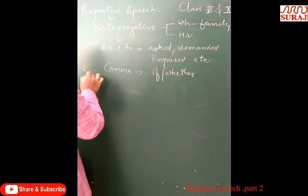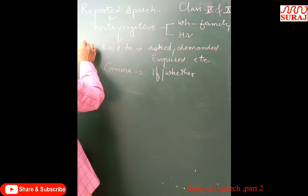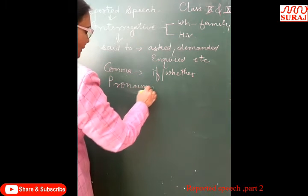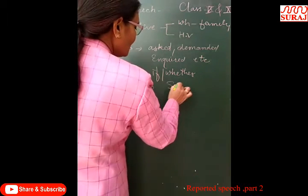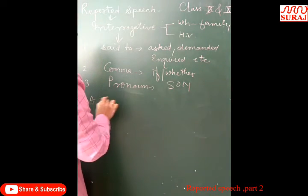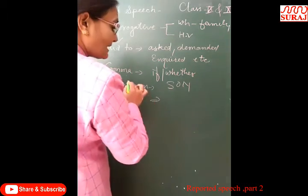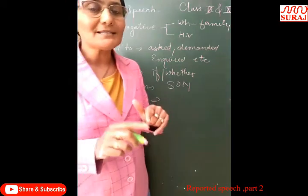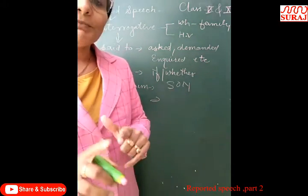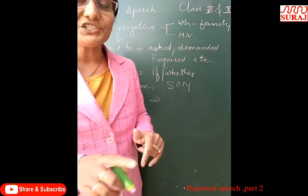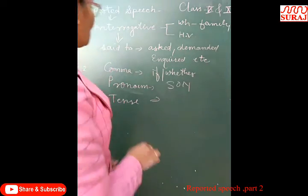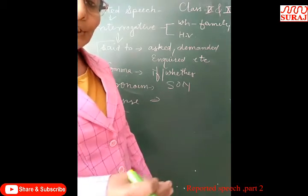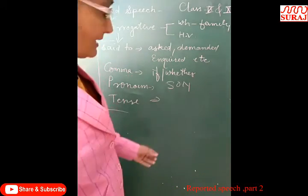Number three: pronouns will be changed according to the SUN formula, as explained in the last video. Number four: tense will be changed according to the corresponding past tense. Rule number two says if the reporting verb is in past tense, the tense of the reported speech will be changed into the corresponding past tense. These four changes must be made whenever we convert direct speech into indirect speech.